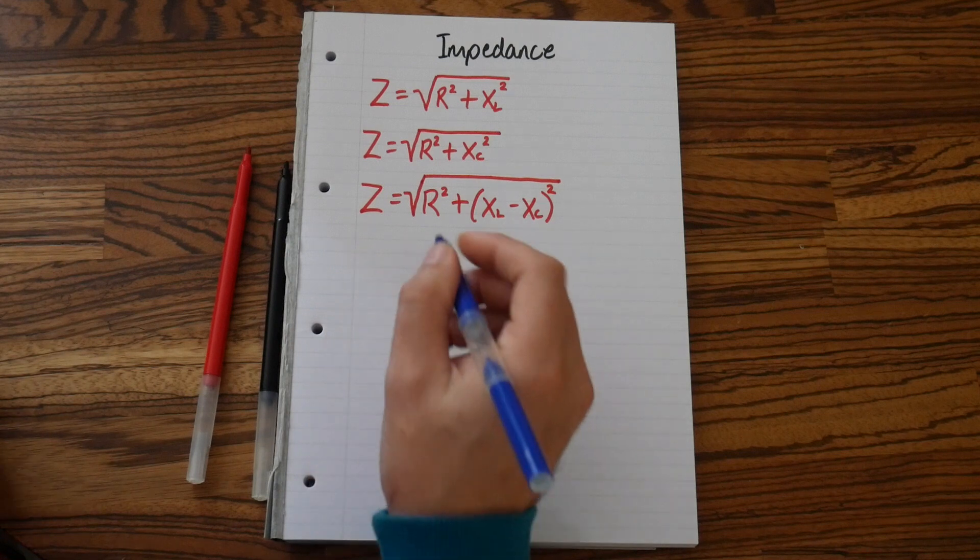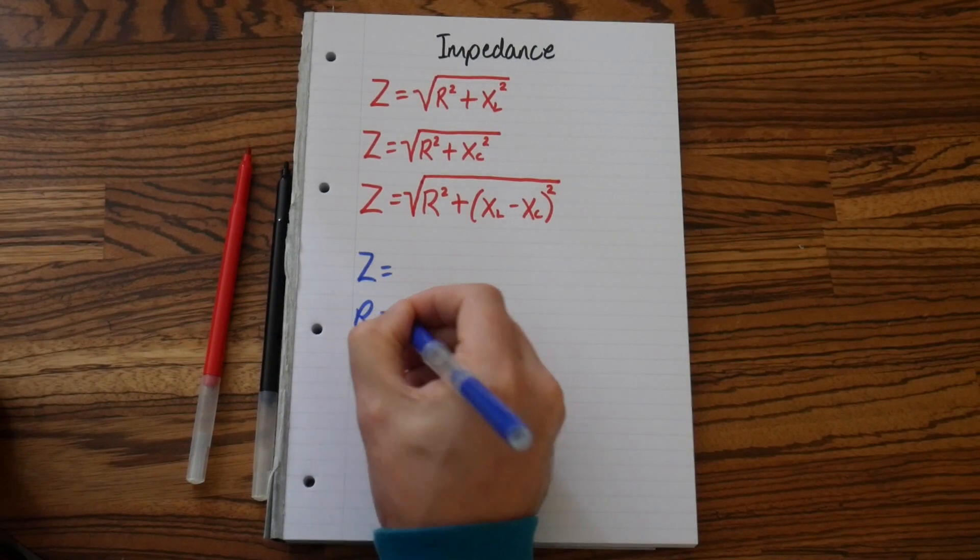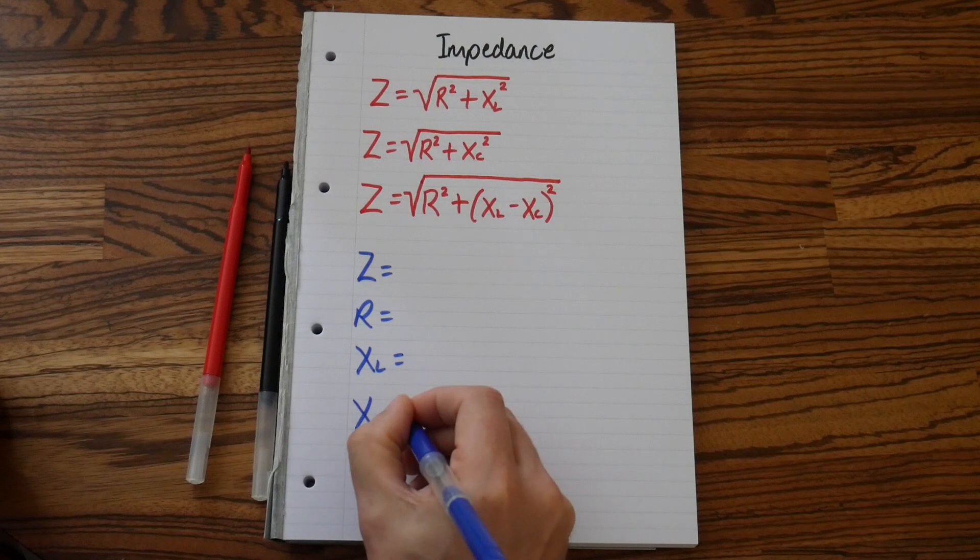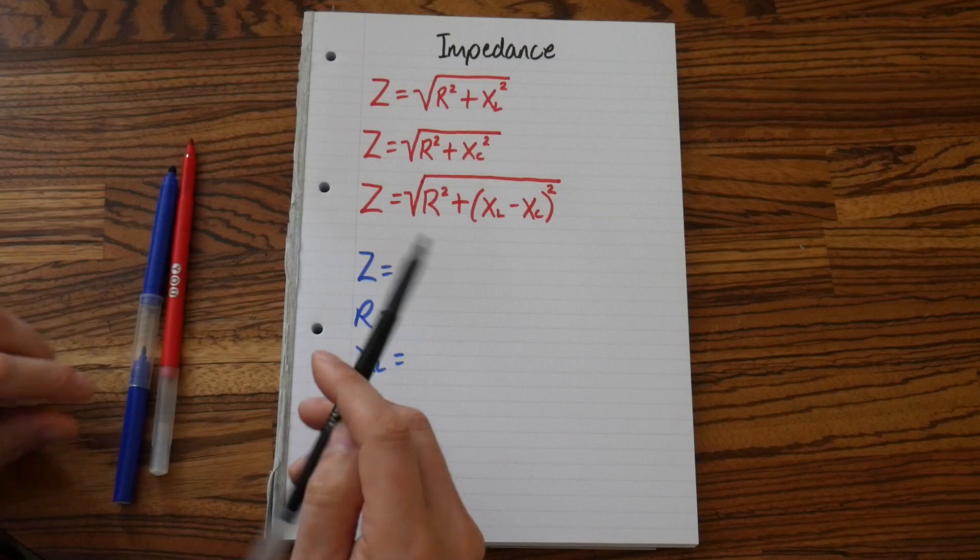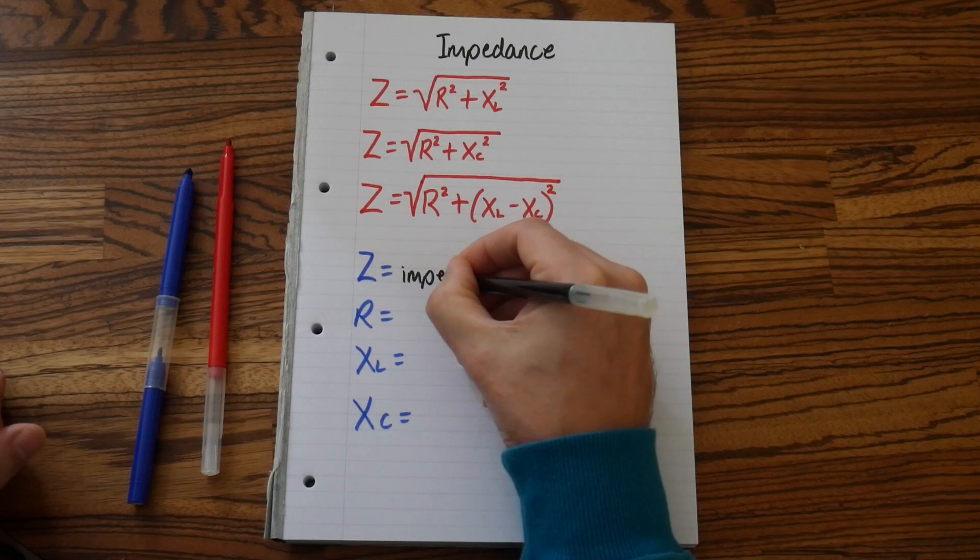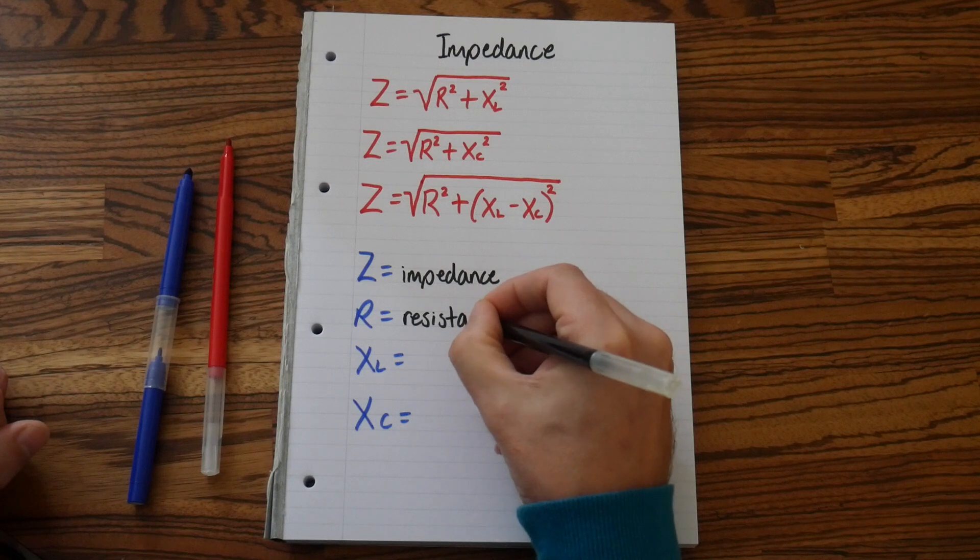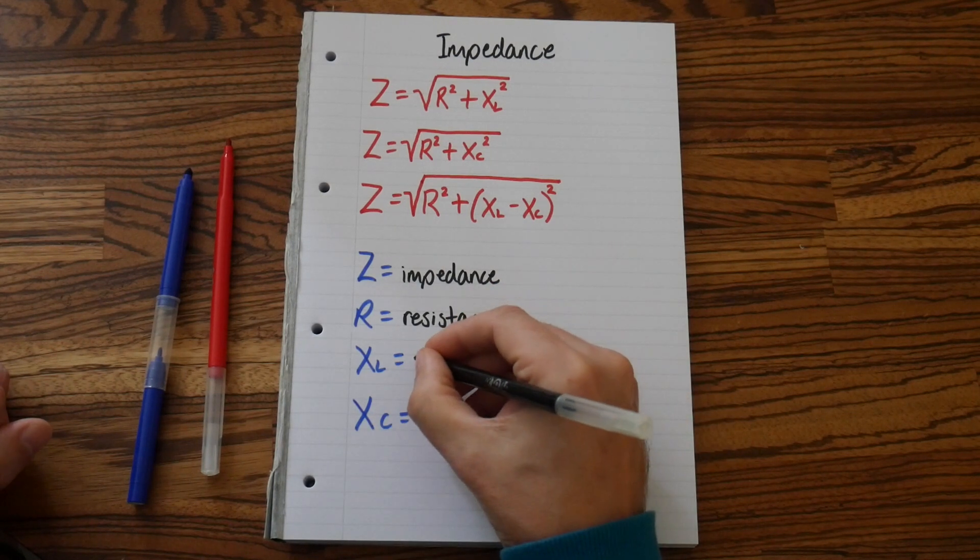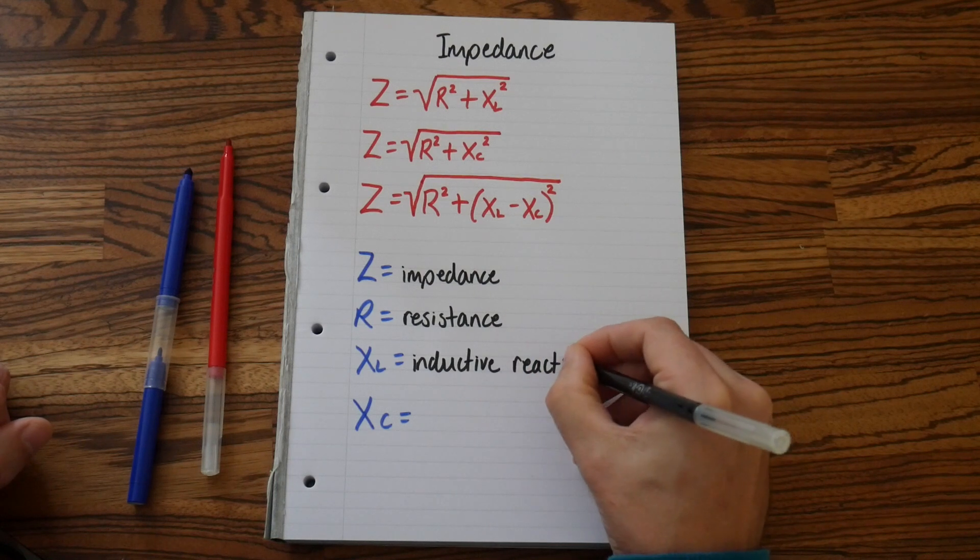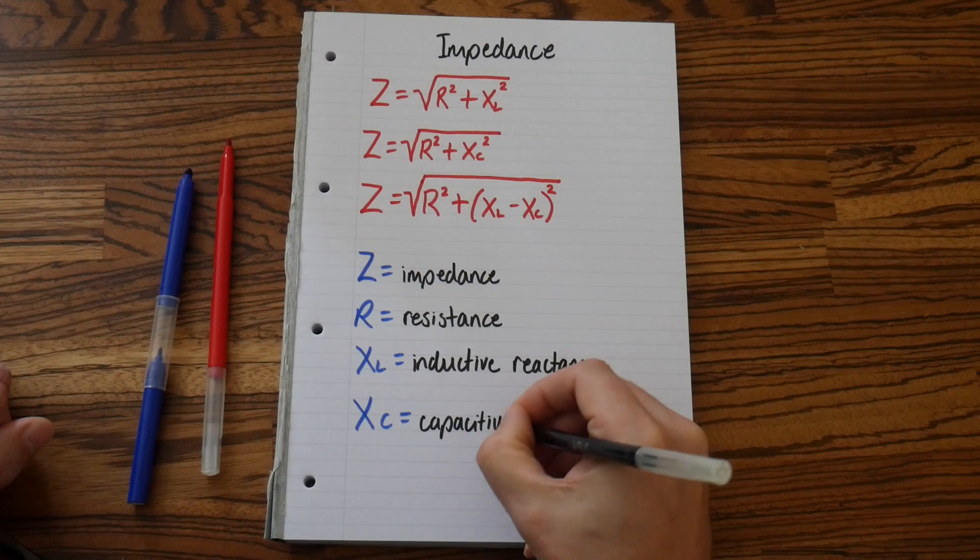Now, let's write down what these letters mean. So we've got Z equals, R equals, we have XL equals, and we had XC equals. So, Z is impedance, R is resistance, XL is inductive reactance, and XC is capacitive reactance.